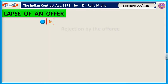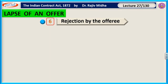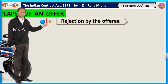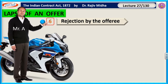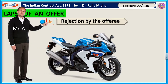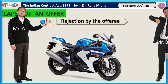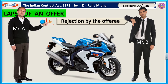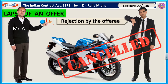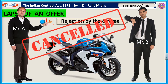The sixth point is rejection by the offeree. Mr. A wants to sell his motorbike to Mr. B, but Mr. B, instead of accepting it, rejects it there — Mr. B rejects saying he does not want the motorbike. The offer stands cancelled; it comes to an end.